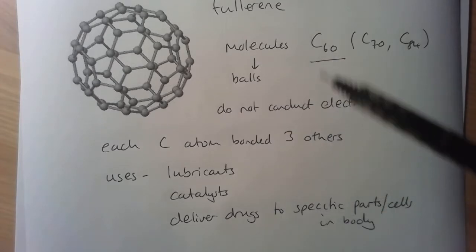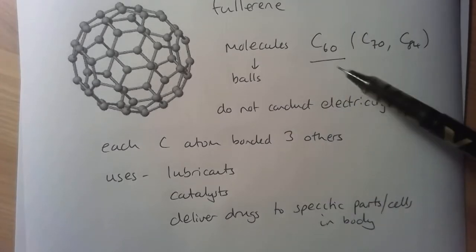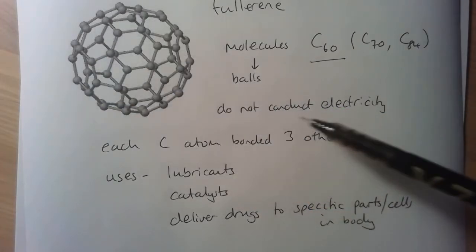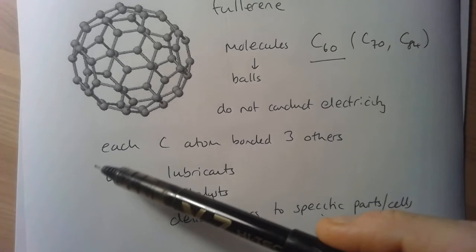So just as a quick summary, fullerenes are molecules with the formula carbon-60. They're arranged as balls. They do not conduct electricity. And like graphite and graphene, each carbon atom is bonded to three others.